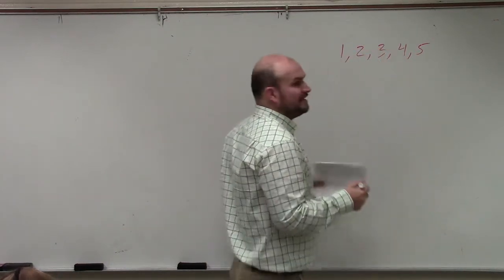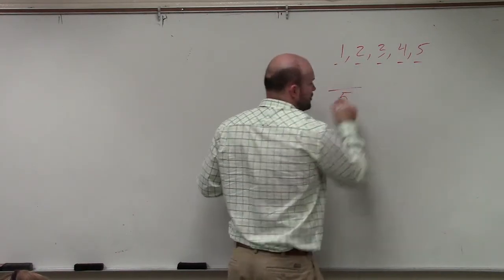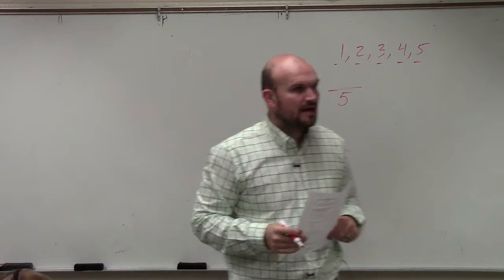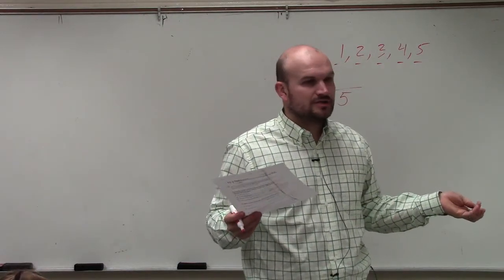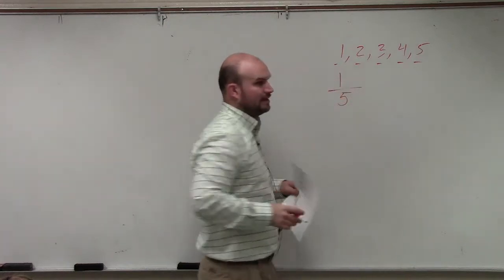Well, how many totally equally likely outcomes do we have? Five. So that's the total number of equally likely outcomes. And then what is the outcome that we are just looking for? One card. So it would be 1 out of 5.